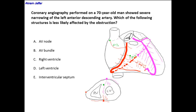Coronary angiography performed on a 70-year-old man showed severe narrowing of the left anterior descending artery. Which of the following structures is less likely affected by the obstruction? The narrowing affects the anterior descending, which is a branch of the left coronary artery. We need to know the branches of the left anterior descending artery, also called the anterior interventricular artery.